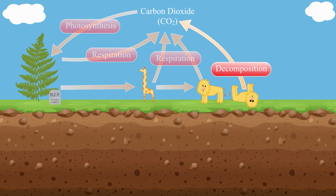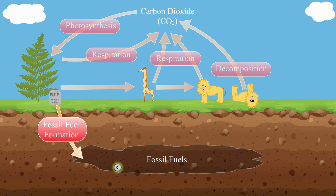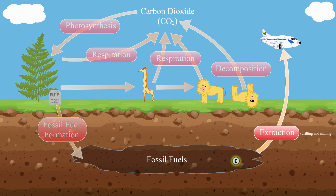Sometimes, dead organisms and wastes don't get completely decomposed. Instead, they get buried deep in the earth and are subjected to intense heat and pressure for many, many years, eventually becoming fossil fuels like coal, oil, and natural gas. These fossil fuels store carbon compounds for very long periods of time. Since these carbon compounds have a lot of stored energy in them, people mine and drill for them in order to use them as energy sources to power our technologies, like factories, vehicles, and power plants. Burning fossil fuels also releases CO2 to the atmosphere.